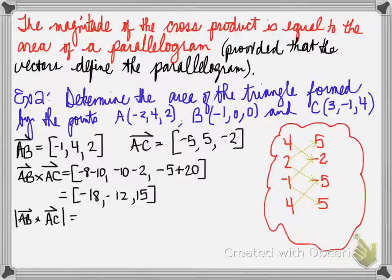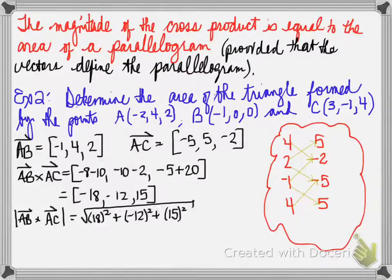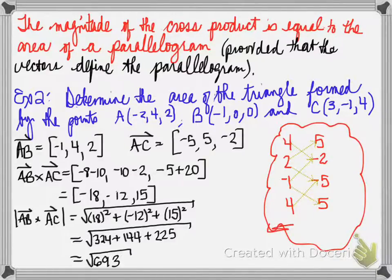You then calculate the magnitude of this particular vector, a cross product, and you find out that the answer is equal to square root of six hundred ninety-three. Now this is the area of a parallelogram.